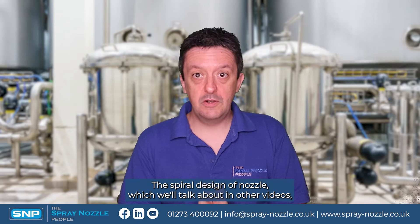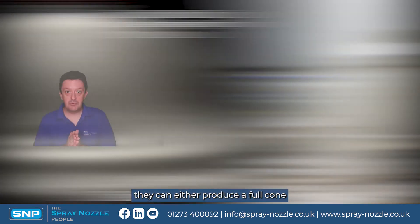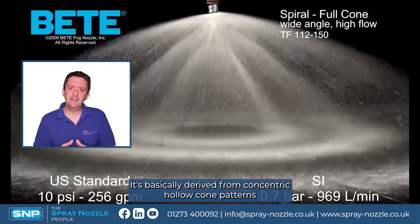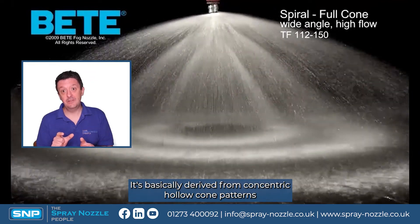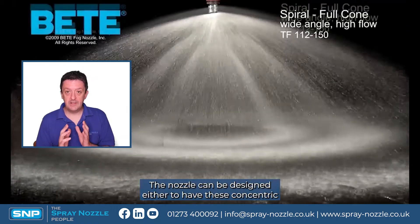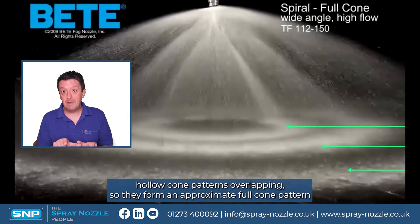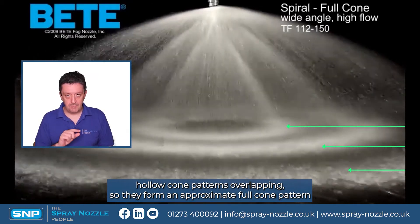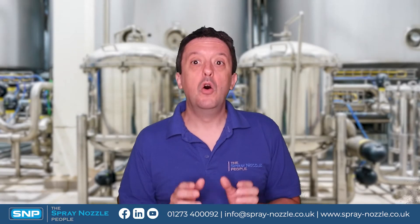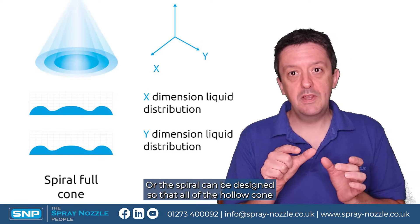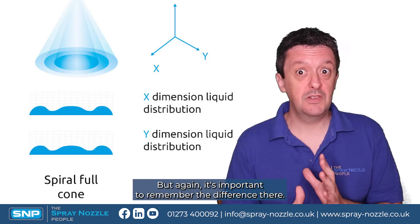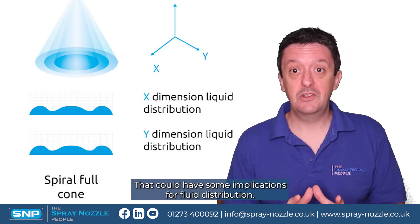The spiral design of nozzle can produce either a full cone or a hollow cone, but the pattern is slightly different. It's basically derived from concentric hollow cone patterns formed by the spiral shape of the nozzle. The nozzle can be designed so these concentric hollow cone patterns overlap to form an approximate full cone pattern, though there will be considerable variation at different parts of that cone. Or the spiral can be designed so all the hollow cone patterns converge into one big hollow cone pattern — this has implications for fluid distribution.